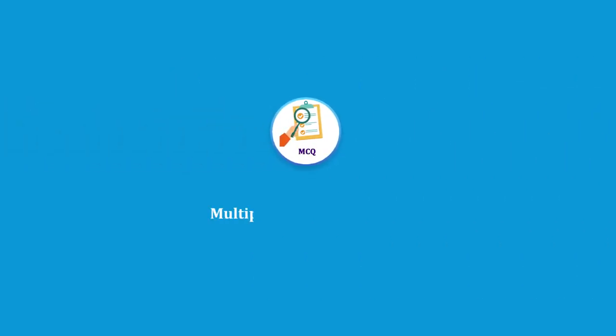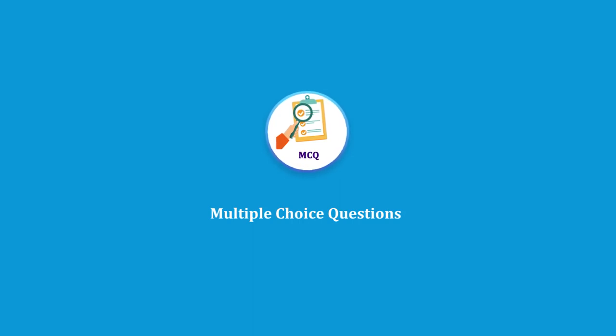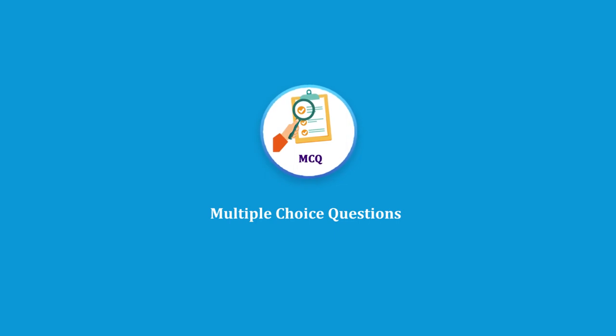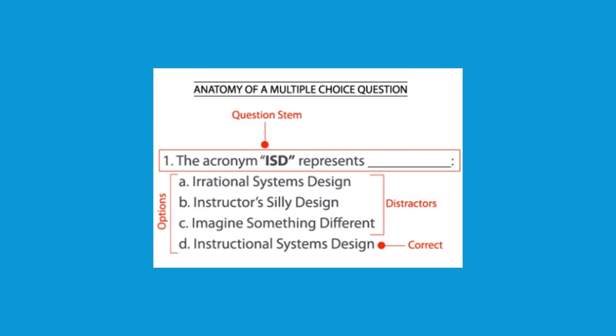In multiple choice questions, we give alternatives to identify the appropriate answer or answers — you can set one correct answer or more than one. The question has a question stem followed by options, typically 3 to 5, and one or more of these options is the correct answer. The remaining options are called distractors. So a multiple choice question consists of a question stem, options, a correct answer, and distractors.